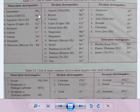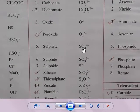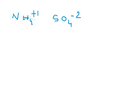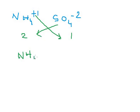Now let's write the formula for ammonium sulphate. Ammonium is NH₄⁺ (charge +1) and sulphate is SO₄²⁻ (charge −2). Cross-multiplying: we write 2 below ammonium and 1 below sulphate. Since ammonium is a compound radical (NH₄), we cannot just write NH₄₂ — that would look like NH₄₂. So we put ammonium in brackets and write the subscript 2 outside: (NH₄)₂. Sulphate has subscript 1, so no bracket needed. The formula for ammonium sulphate is (NH₄)₂SO₄.